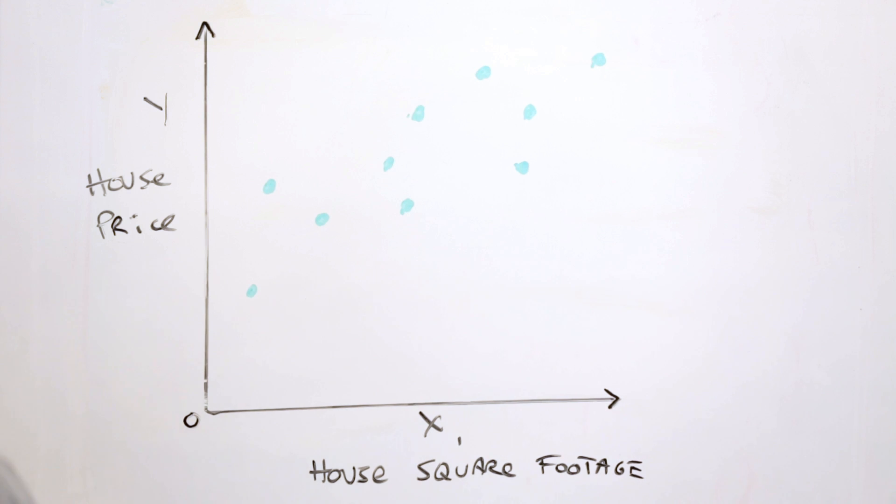So here we've got a small data set. On the x-axis, we've got our input feature, which is showing housing square footage. On our y-axis, we've got the target value that we're trying to predict of housing price. So we're going to try and create a model that takes in housing square footage as an input feature and predicts housing price as an output feature.